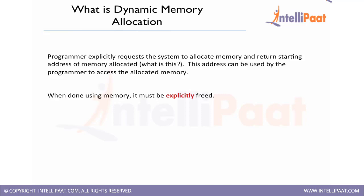So what is dynamic memory allocation? In case any programmer wants some portion of memory to be allocated for their program, they can call some functions which will allocate that amount of memory so that they can use it for storing data and performing some operations. Programmers explicitly request the system to allocate memory, and once we request it, the function returns the starting address of the chunk of memory which is allocated.